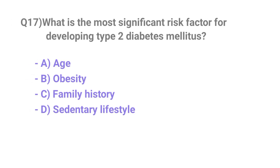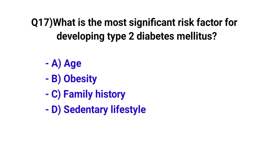Question number 17. What is the most significant risk factor for developing type 2 diabetes mellitus? The correct option is B. Obesity.